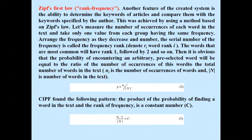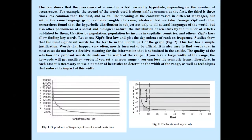Another feature of the created system is the ability to determine the keywords of articles and compare them with the keywords specified by the author. This was achieved by using a method based on Zipf's law. We measure the number of occurrences of each word in the text and take only one value from each group having the same frequency. The frequencies are arranged in decreasing order. The serial number of each frequency is called a frequency rank. The words that are most common will have rank 1, followed by 2, and so on. Zipf's law allows finding keywords by plotting the dependence of rank on frequency. Studies show that the most significant words for the text lie in the middle part of the graph.